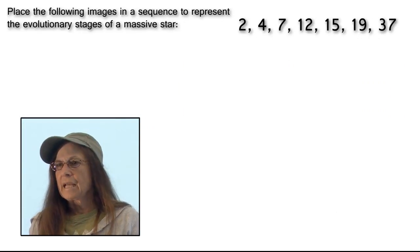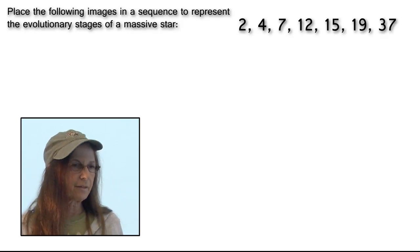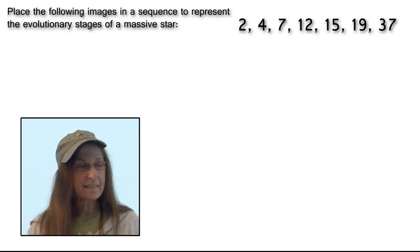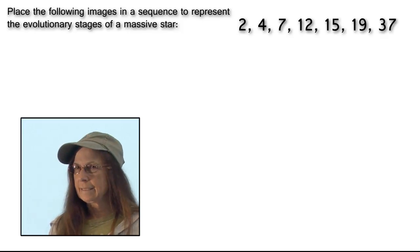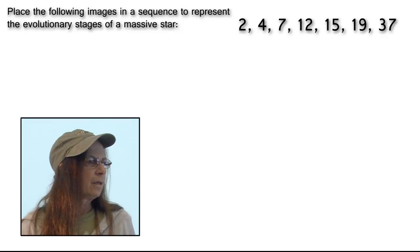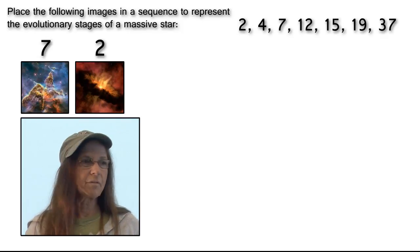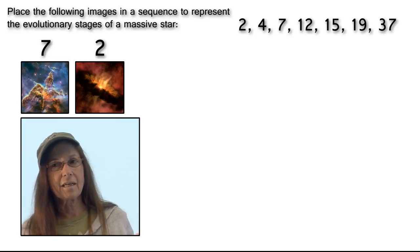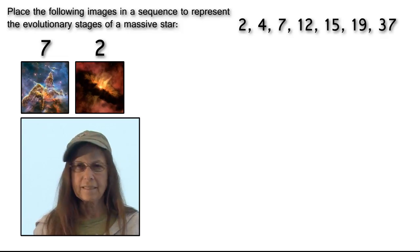Let us now put a simple scenario together for a more massive star, like the 2018 event. This time, they pull out numbers 2, 4, 7, 12, 15, 19, and 37. Again, we can start out exactly the same because I have the same two images to begin with. So, we know that is a stellar formation region and we know that is a protoplanetary system.